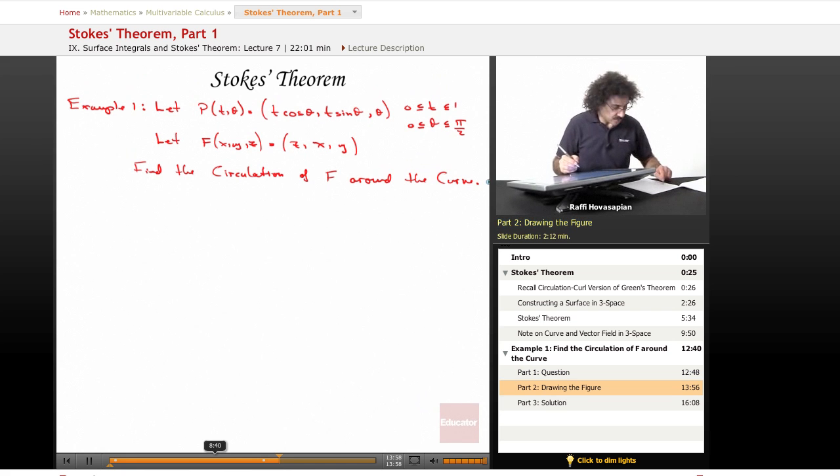Let's draw this out and see what it looks like. This parameterization—t goes from zero to one, theta goes from zero to pi over two—this is the parameterization of a spiral surface. In other words, imagine a parking ramp. It is a spiral surface.